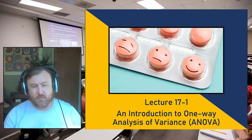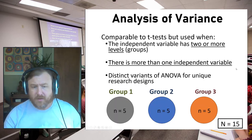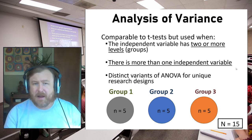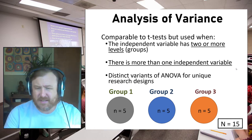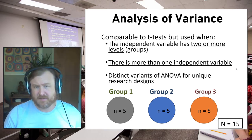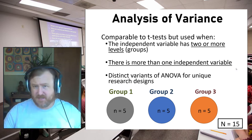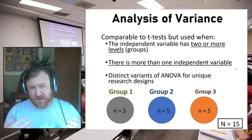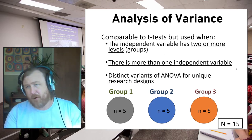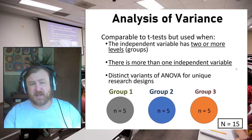So what is an analysis of variance, and why would someone want to conduct one? Analysis of variance is comparable to a t-test in the sense that we are essentially comparing means, but we're able to compare more than two at a time. With a t-test, you're only looking at one mean versus another mean. With analysis of variance, we're able to partition variance out and compare more than two groups at a time.